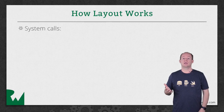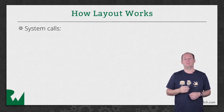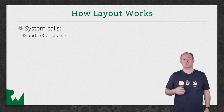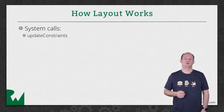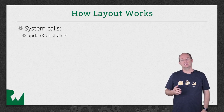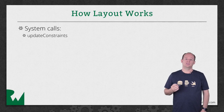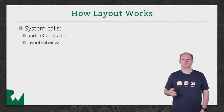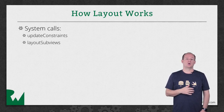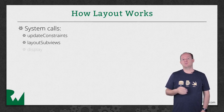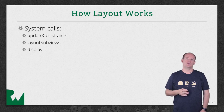When the system is doing a layout pass, it first calls Update Constraints on each view. You can override this method to create constraints on your UIView subclass, but in most cases you don't need to — you can just create constraints inline with the rest of your logic, where it makes the most sense. Then the system calls Layout Subviews on each view, which typically does the work of calculating the size and position of the view based on the constraints. Then Display or DrawRect is called to render the view to the screen.